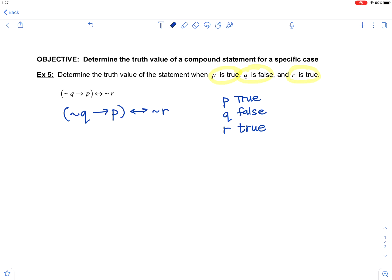You can go right into the negation, or you can go ahead and look and say Q is false, so I'm going to write not false. I'm going to replace the statement with its truth value. Not false implies true if and only if not true.